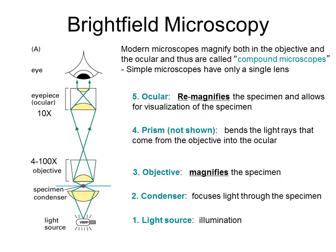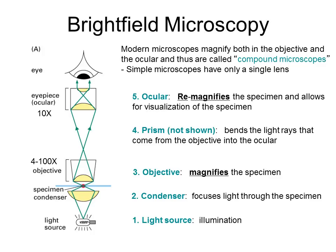Prisms bend the light rays from the objective into the ocular lens, where a re-magnification occurs, allowing visualization of the entire specimen. The total magnification of a compound microscope is the combination of the ocular and the objective. Usually the ocular piece has a 10x magnification, and the objective lens has magnification of 4x, 10x, 40x, or 100x in the case of oil immersion. Next slide.